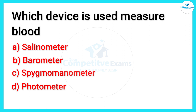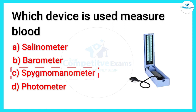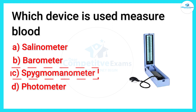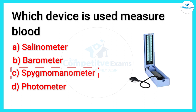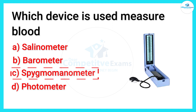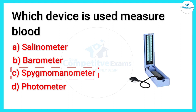Friends, the right answer is sphygmomanometer. A blood pressure monitor or blood pressure gauge is a device used to measure blood pressure. Sphygmomanometer is the equipment that can be used to measure BP.